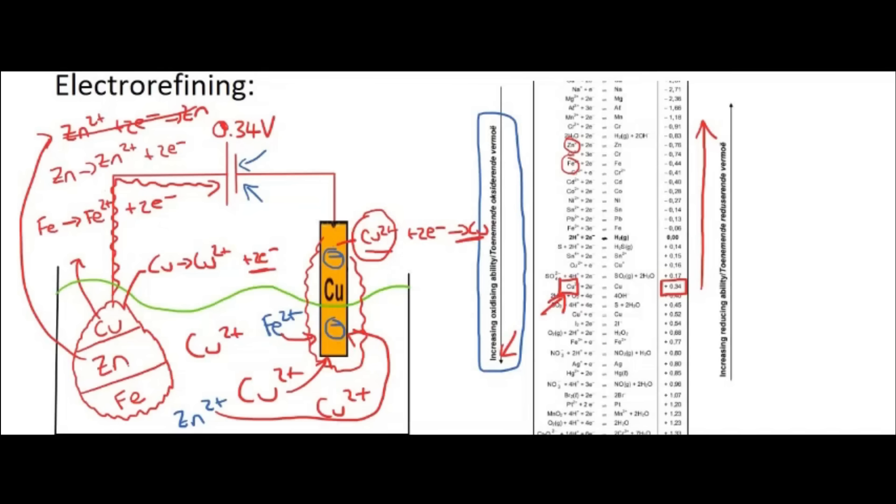And so over time, what we can see is that we've taken the copper out of this solution, or out of that metal, and we've placed it over here. And so what we can say is that this is going to be pure copper. And so we have made it pure. And that is what electrorefining is all about.